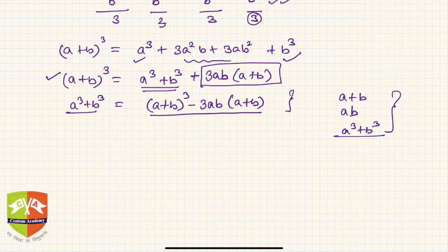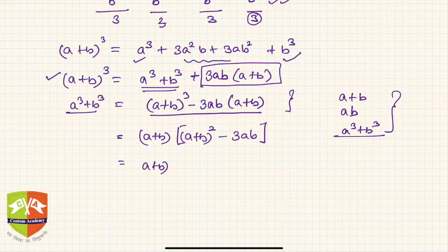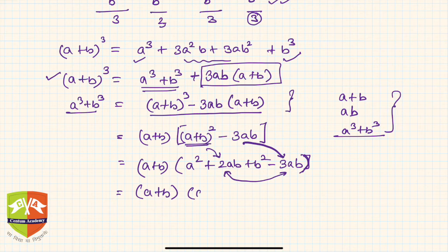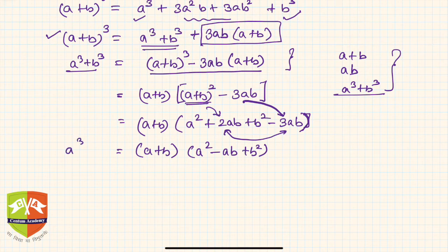We can go further. Taking (a + b) as common from a³ + b³ = (a+b)[(a+b)² − 3ab]. Expanding the bracket: (a² + 2ab + b²) − 3ab = a² − ab + b². Combining like terms gives us another beautiful relationship: a³ + b³ = (a + b)(a² − ab + b²).